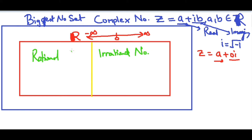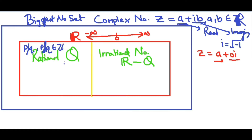The notation for rational numbers is Q. For irrational numbers, you might not have seen a specific symbol, but the intelligent idea is that R minus Q represents irrational numbers. Rational numbers are those numbers which can be expressed in the form p/q, where p and q are both integers, and q should not be equal to 0 — otherwise it will be infinity. The notation for rational numbers is Q.